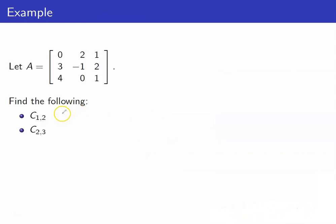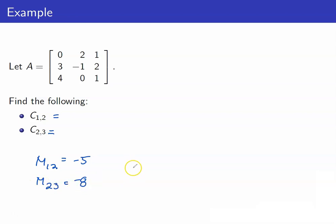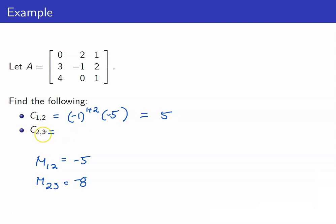Let us compute C12 and C23. We already computed M12 to be negative 5 and M23 to be negative 8. For C12: negative 1 raised to 1 plus 2 — which is odd — times negative 5, giving positive 5. For C23: 2 plus 3 is also odd, so it's negative 1 times negative 8, giving positive 8.